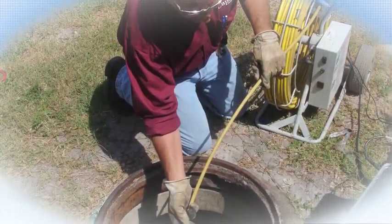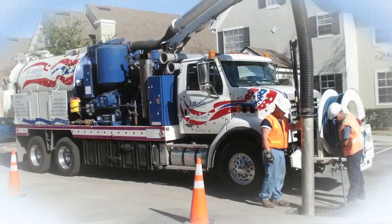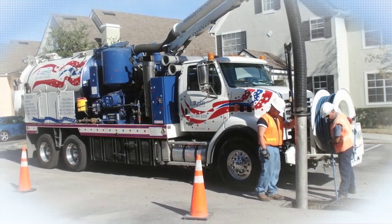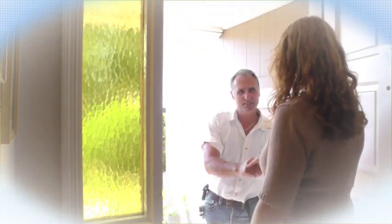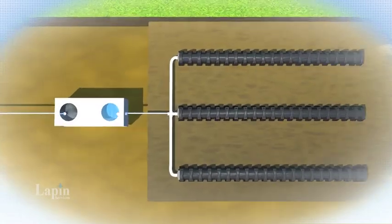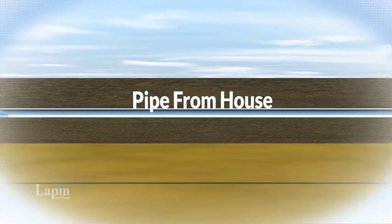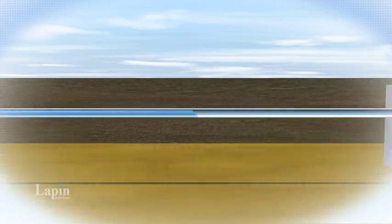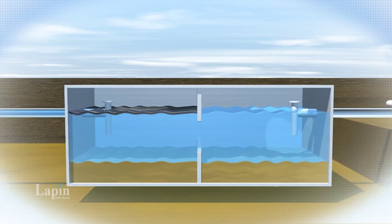They dispose of wastewater directly into the ground, while solids are contained in the septic tank for periodic removal by a licensed septic contractor like Lapin Services. All water from your home goes through a single pipe below the ground that flows into the septic tank, which holds about 1,000 gallons.